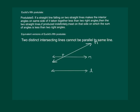That also means that if M is parallel to L, then any other line which intersects M cannot be parallel to L.